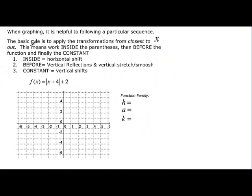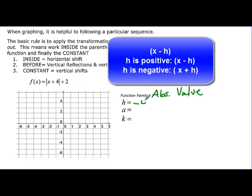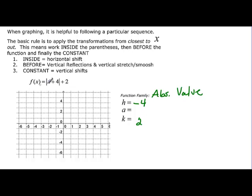Let's put it all together. It's helpful to apply the transformation closest to x first, then work your way out — the constant is always last. Here we have an h and a k. The parent function is the absolute value. h is negative 4 (since it's x minus h), k is 2, and a is just 1. The vertex of the absolute value graph starts at (0, 0), so we go left 4 and up 2 to the new vertex, and sketch the absolute value graph from there.